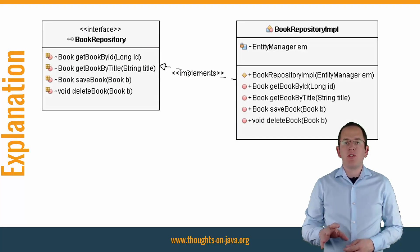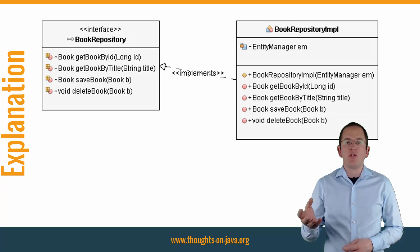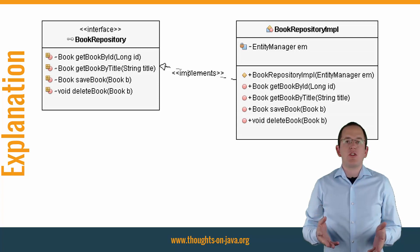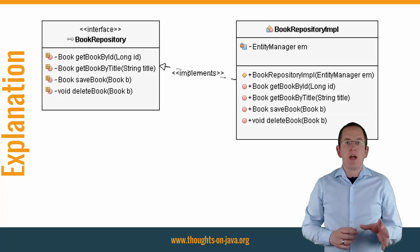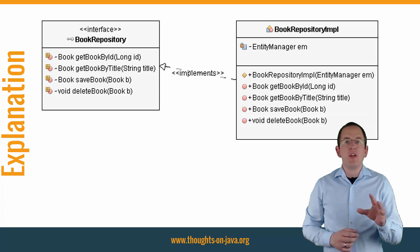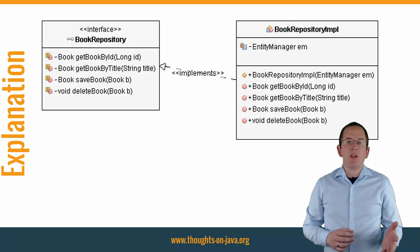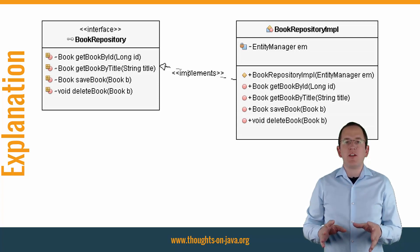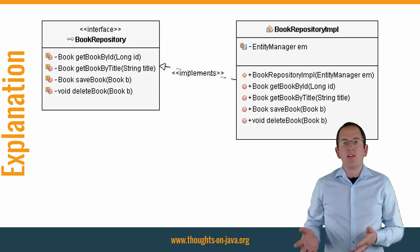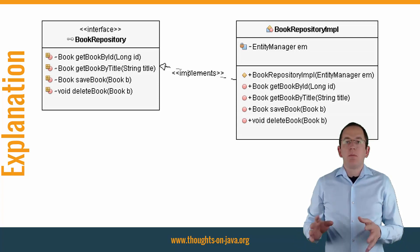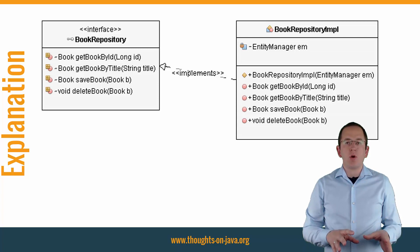The repository pattern is pretty simple. An interface defines the repository with all logical read and write operations for a specific entity. You can see an example of such a repository interface in the diagram. The interface gets implemented by one or more classes that provide datastore-specific implementations of each interface method. In my experience, it only rarely happens that you need to support more than one datastore, so you could argue that this pattern creates an over-engineered persistence layer.